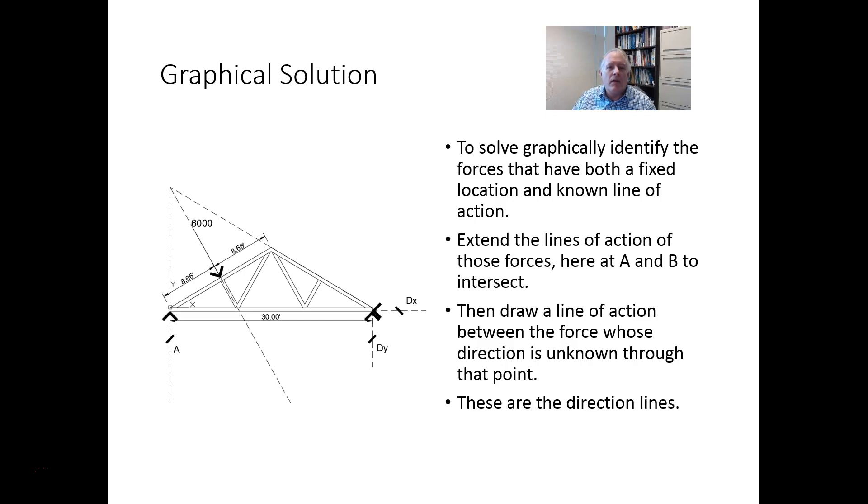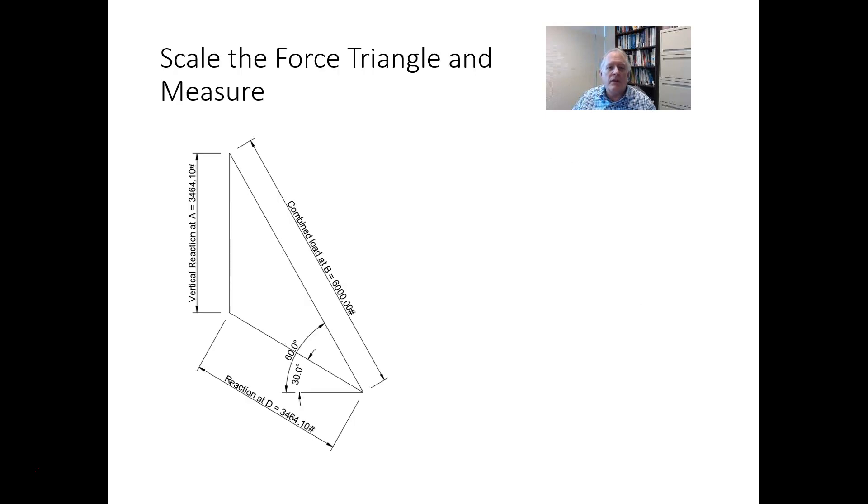So these are just direction lines. They don't indicate how big the magnitude of any force is. To do that, you have to scale a known force. So in this case, you would either scale, and you can do that in AutoCAD, by using the scale command, so that the force in, that's in the same direction at B, is 6,000 units long.